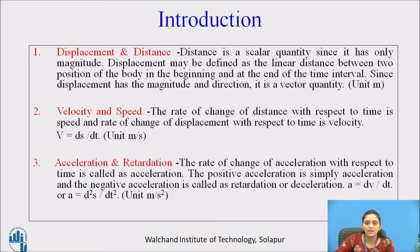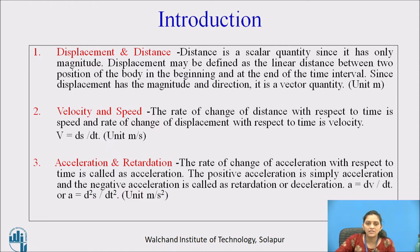Velocity and speed. The rate of change of distance with respect to time is speed, and the rate of change of displacement with respect to time is called velocity. Velocity is ds by dt. Unit of velocity is meter per second.